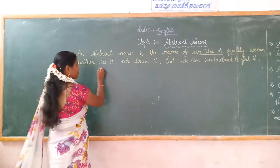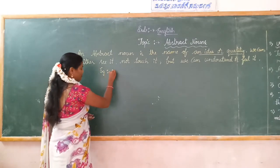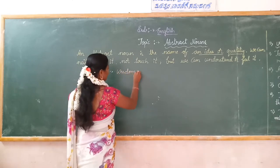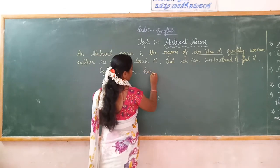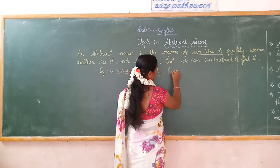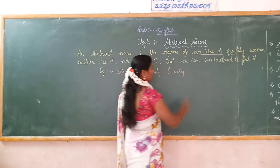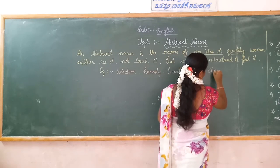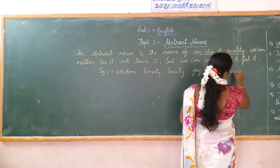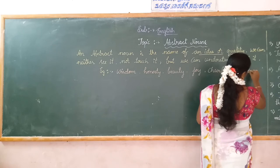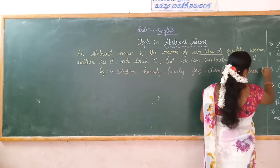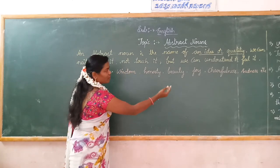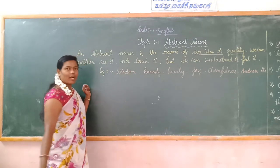Abstract noun examples: wisdom, honesty, beauty, joy, cheerfulness, sadness, etc. These are our examples for the abstract noun.